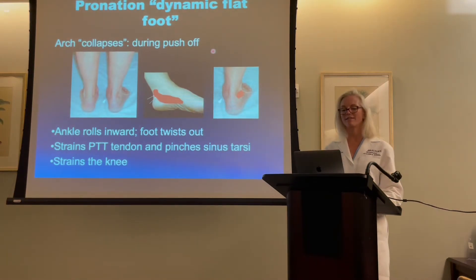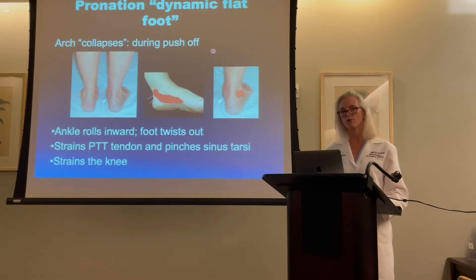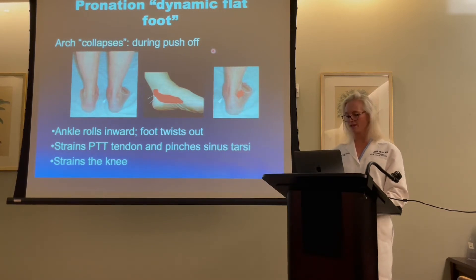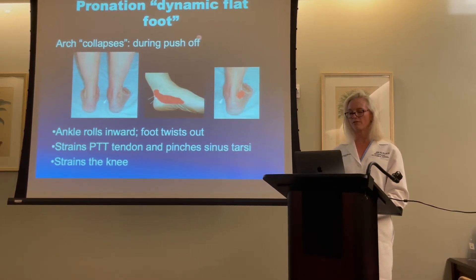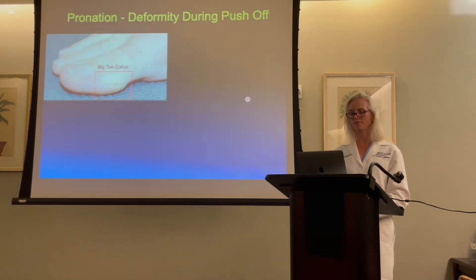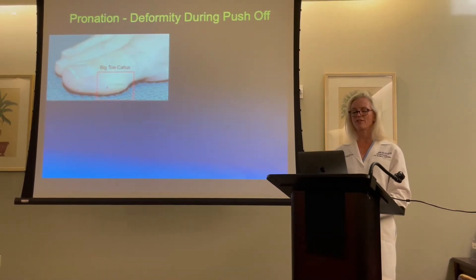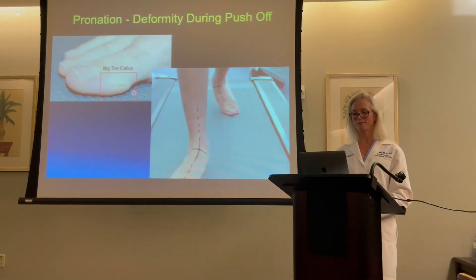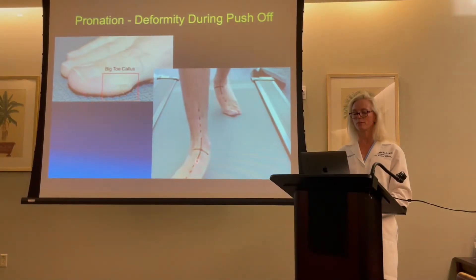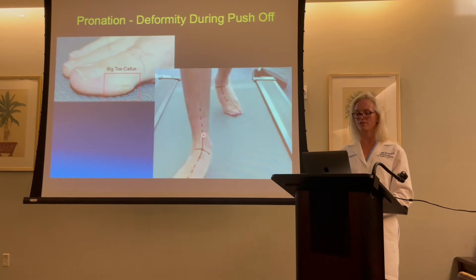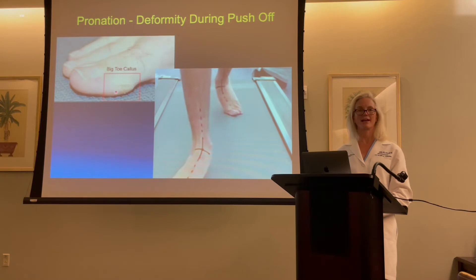Pronation is called a dynamic flat foot. What happens with pronation is that the arch rolls in as you push off. This strains the tendon that attaches to the inside of the arch and pinches the sinus tarsus. If you have a callus in the area of your big toe, you are a pronator. This is an example of a person walking on a treadmill who's a pronator — the ankle is rolling in, and when the ankle rolls in, it causes the inside of the big toe to propel the foot forward during push off, causing that callus.